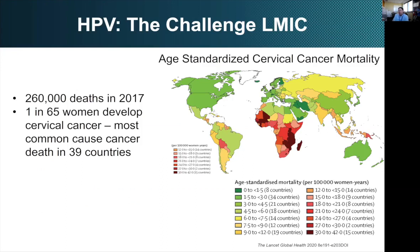Let's switch now and talk briefly about HPV. The challenge in low- and middle-income countries is enormous — over a quarter million deaths in 2017 related to HPV infection, with one in 65 women dying of cervical cancer, the most common cause of cancer death in those settings. Looking at age-standardized mortality, the burden is very unequally distributed, with overwhelming disease in sub-Saharan Africa but also high levels elsewhere in the world, including places like Bolivia.